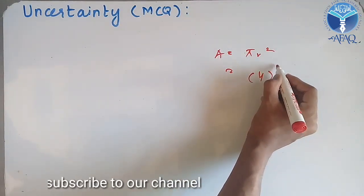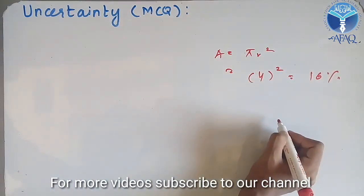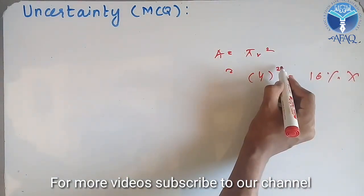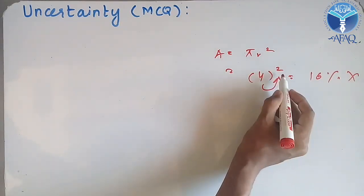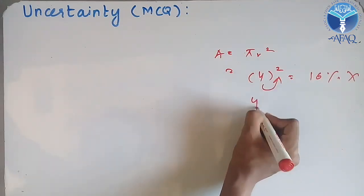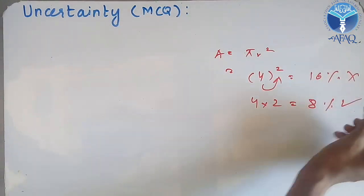That is completely wrong, because in percentage and in case of power of quantity, the percentage of uncertainty will be multiplied with that of its own power. So 4 multiplied by 2 will be equal to 8%, which is the correct option.